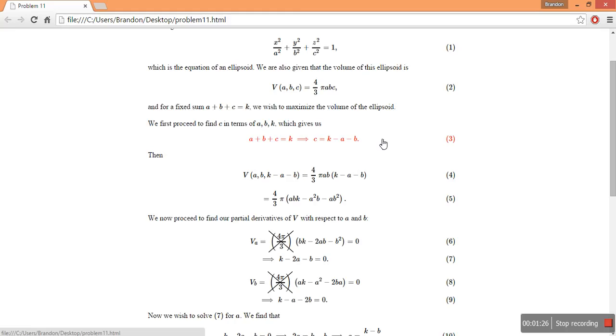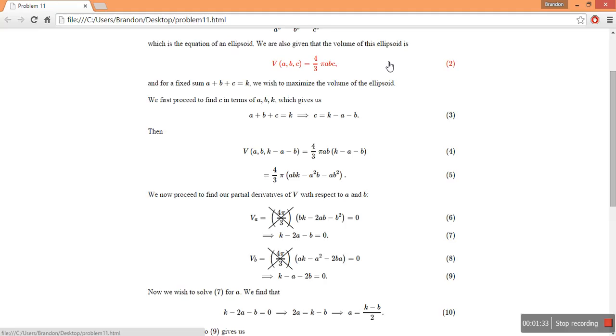And the next thing we want to do is substitute this into 2 up above that the problem gave us, and we find that the volume in terms of a, b, k is 4 thirds pi ab times k minus a minus b.